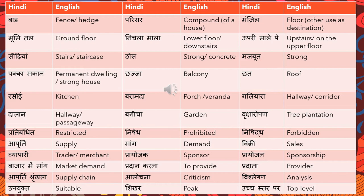'Apurthi shrinkhala' means supply chain. 'Alochana' means criticism, visualization, or analysis. 'Upyukt' means suitable. 'Shikhar' means peak or summit — 'uchi shikhar par' means at the top level.